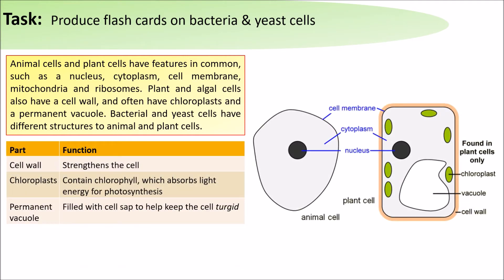Remember that plant cells also have a cell wall which strengthens it. Plant cells have chloroplasts which carry out photosynthesis and a permanent vacuole.